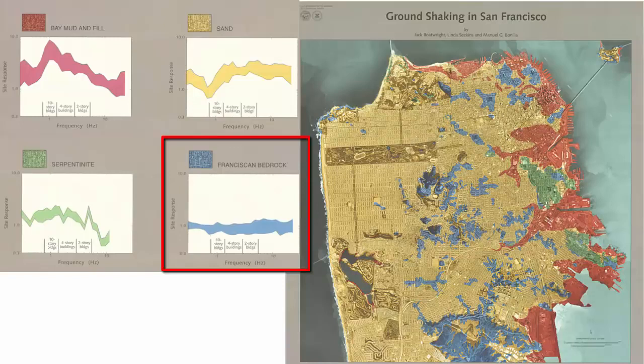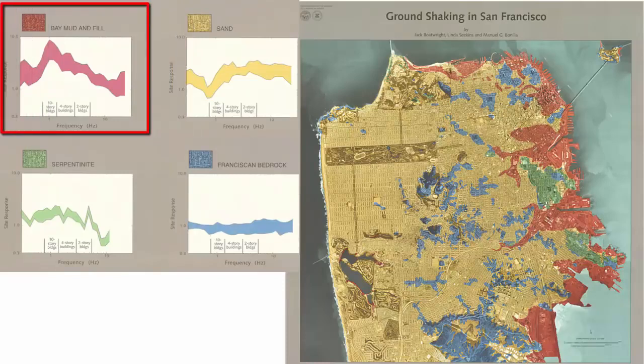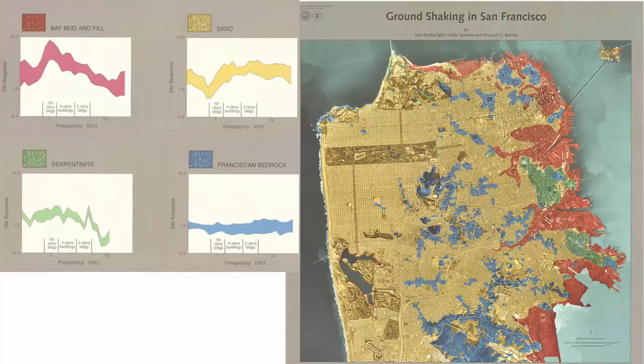Solid bedrock shakes least. Unconsolidated sand shakes more. And unconsolidated mud, bay fill, shakes the most, like jello. Finding the most stable ground to build on is a key part of minimizing damage during earthquakes.